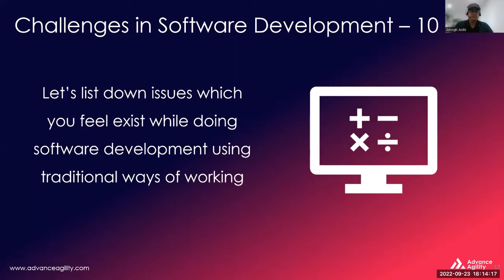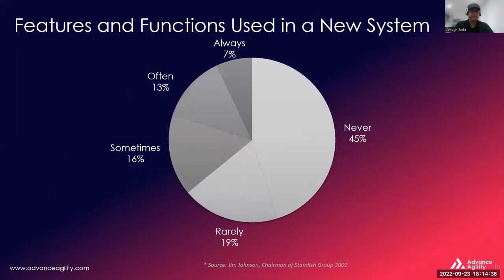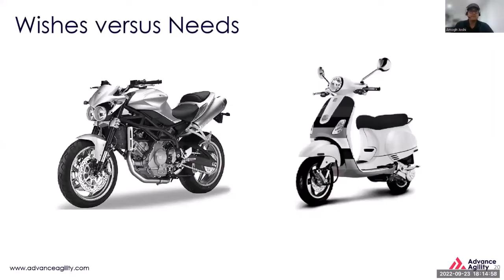Based on certain research, we know that there was a software crisis. Most of the projects that people were developing were failing — either they were not completed, or they were not completed in time, or they were overrunning the cost. Another factor was that most of the projects have features that were never used. Almost more than 45 percent of features were never used, and around 19 percent were very rarely used.